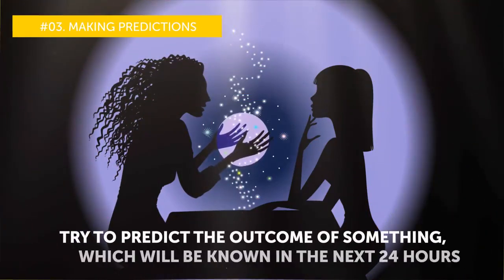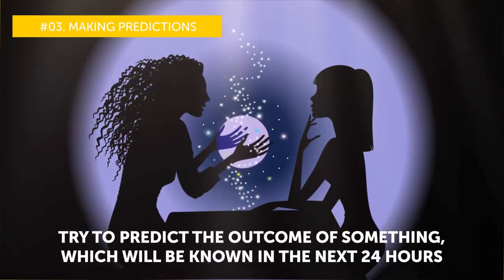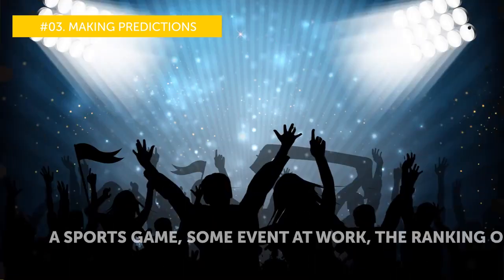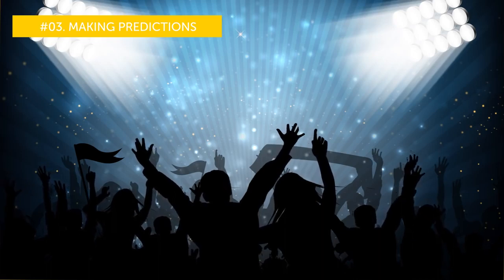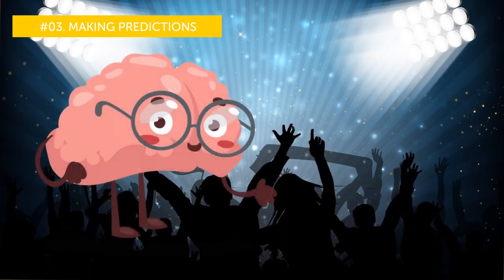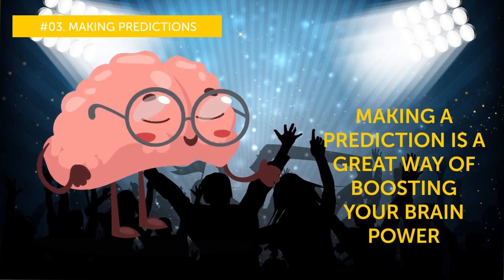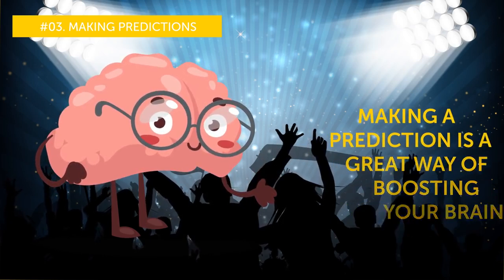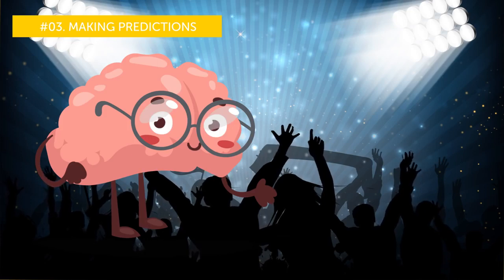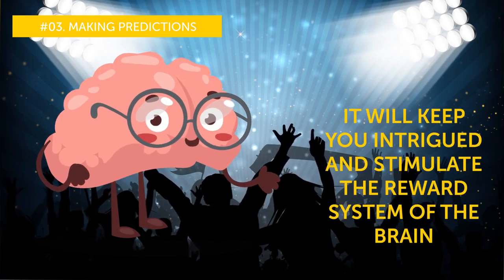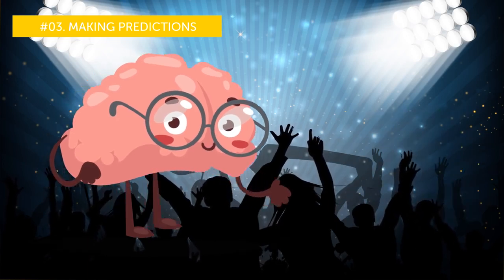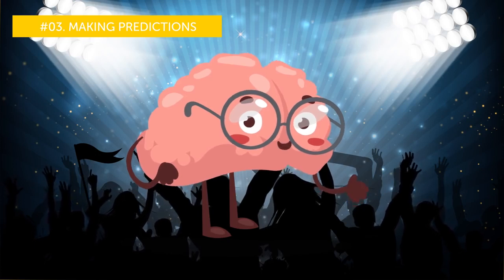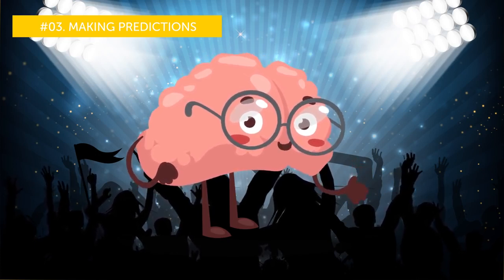Number three, making predictions. Try to predict the outcome of something which will be known in the next 24 hours. A sports game, some event at work, the ranking of your favorite band in the music chart. It can be whatever, then wait to find out the results. What's the point of it? Making a prediction is a great way of boosting your brain power. First, it takes some imagination to do it. Second, it will keep you intrigued and stimulate the reward system of the brain. According to neuroscientist Judy Willis MD, if you were right you would be happy. If you were wrong you will make your conclusions and might learn something new.